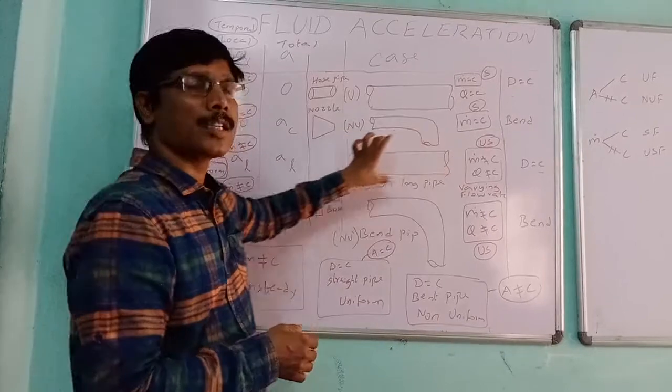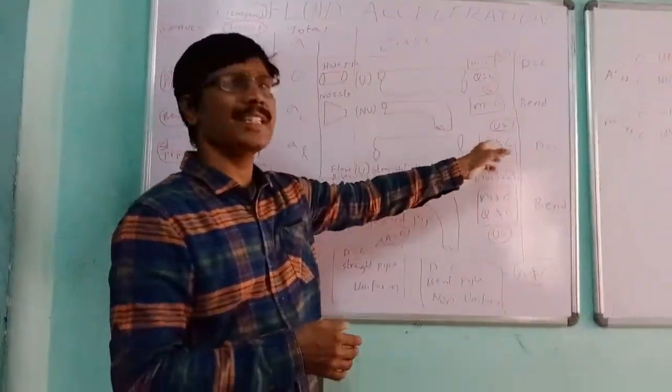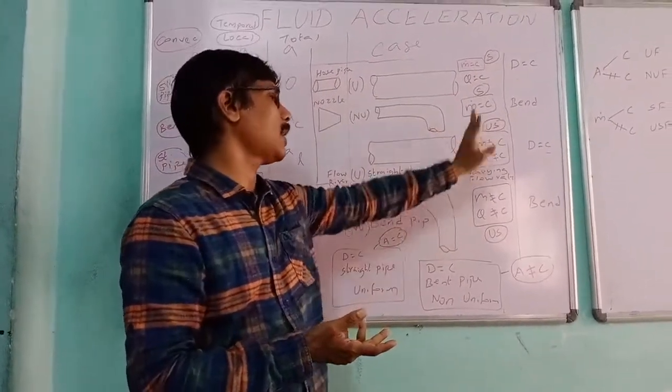Next is straight long pipe having constant diameter. In this straight long pipe we can get uniform flow, but it is a long pipe so the mass flow rate is not constant. So we can get uniform flow and unsteady flow.